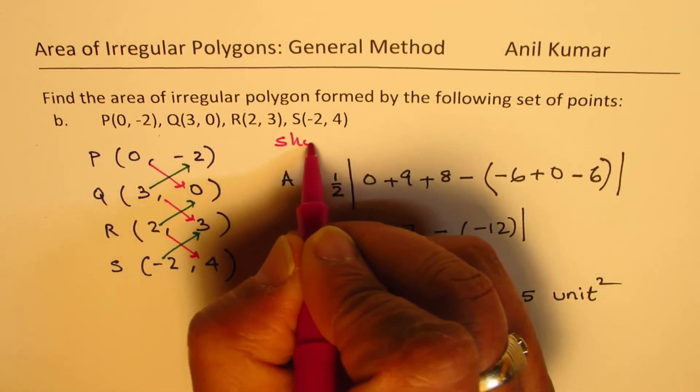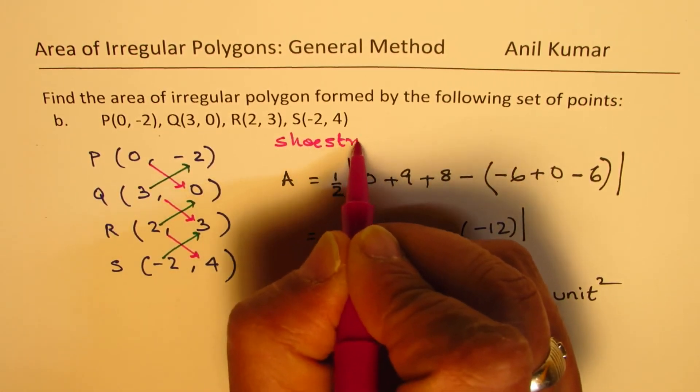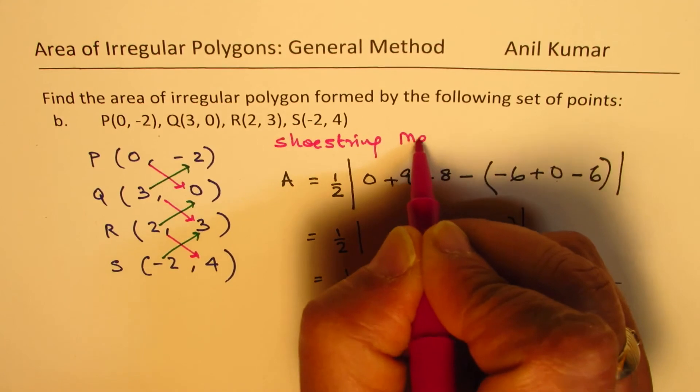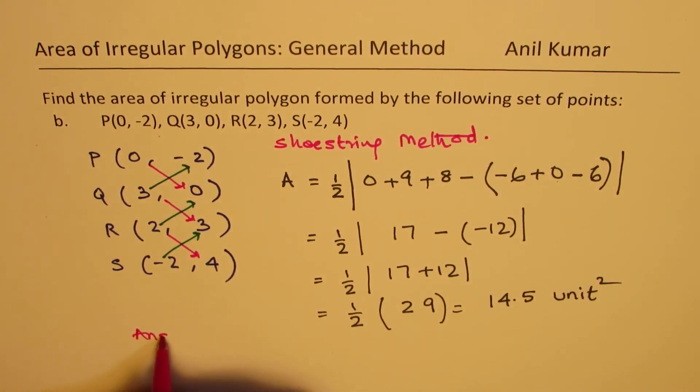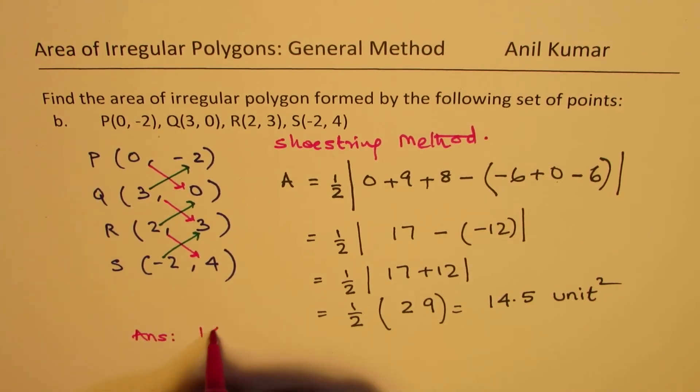Once again, it is called shoestring method to find area for any polygon. Our answer here is that the area is 14.5 units squared.